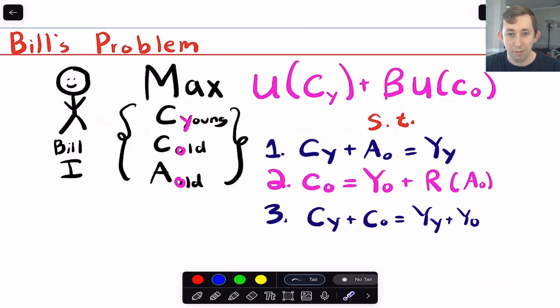So that's any Bill's problem. That's a Bill problem for any generation. I'm just using the original Bill because it's easy. But this is what Bill's problem is. And now that we know the setup, now that we know Bill's problem, we can define the overlapping generations competitive equilibrium.